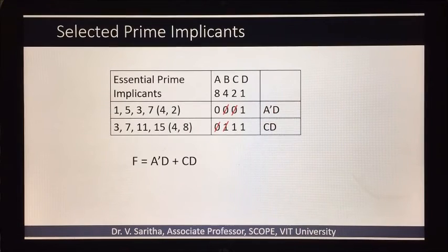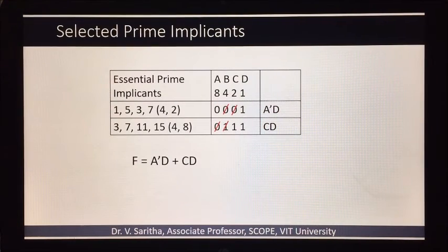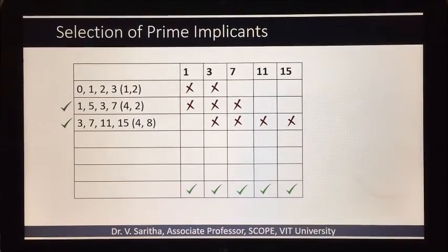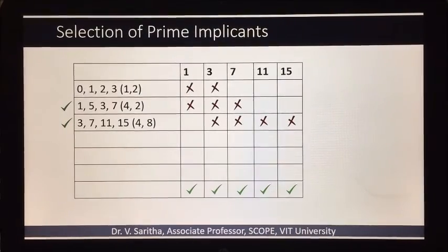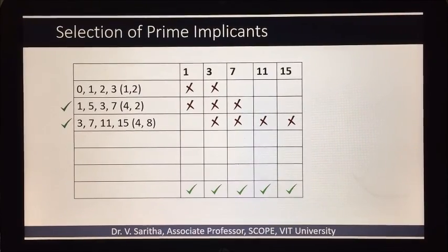So my answer is f equals a bar d plus cd. The only thing we have to remember is we are not supposed to include the don't care conditions while we are doing the second step, that is selection of prime implicants. Thank you.